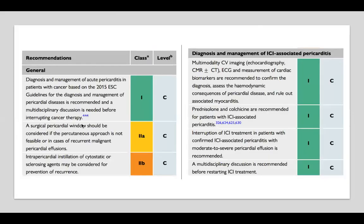For pericardial disease, diagnosis and management follow the 2015 ESC guidelines. If pericardial effusion is a cardiovascular toxicity of chemotherapy, stopping the drug should resolve it. If due to advanced cancer, longer-term management is needed, including sclerosis with agents such as bleomycin, pleuropericardial window, or surgical pericardial window if percutaneous approach is not feasible. Cytostatic or sclerosing agents may be considered for prevention of recurrence in malignant pericardial effusions.